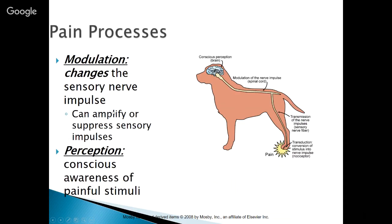Modulation changes that sensory nerve impulse — it can amplify or suppress the sensory impulses. It can say 'this is really bad, you need to pay attention to it,' or it can say 'we've seen this before, no big deal, keep moving.' Perception is that conscious awareness of the painful stimuli.